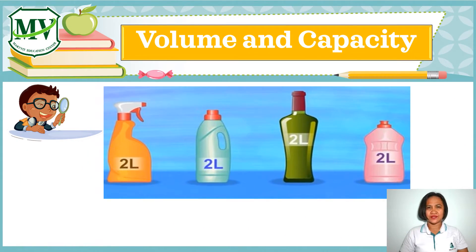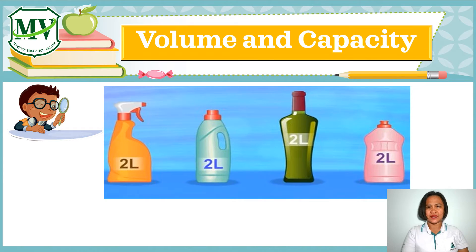Look at the following bottles. They look different — they have different shapes, different heights, different colors, and different liquid inside. But they have one common property: the amount of liquid inside the bottles are the same. Each bottle holds 2 liters of liquid. So all these bottles have a common property — the amount of space they have for holding a liquid. This space is called capacity.